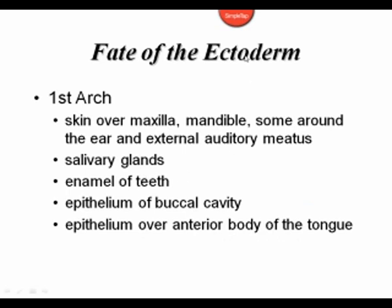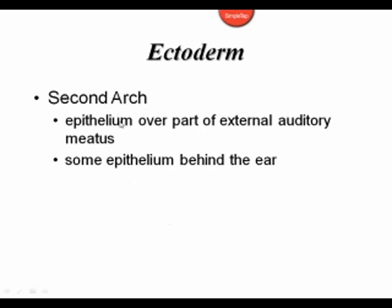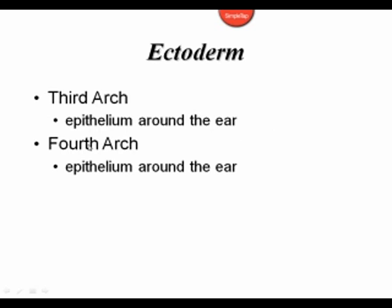Looking at the fate of the ectoderm: the first arch gives rise to the skin over the maxilla, the mandible, a little bit around the ear, and the external auditory meatus. The ectoderm also gives rise to salivary glands, the ameloblast — which gives rise to the enamel of the teeth — the epithelium of the buccal cavity, and the epithelium over the anterior two-thirds of the tongue. The second arch ectoderm gives rise to epithelium over part of the external auditory meatus and behind the ear. The third and fourth arch ectodermal derivatives are some of the epithelium around the ear.